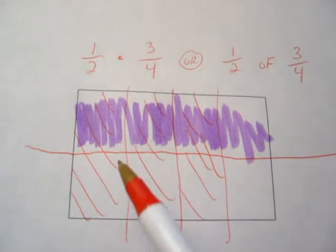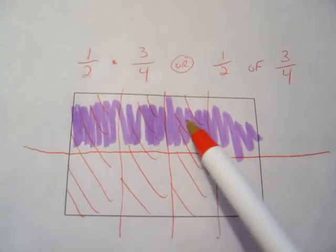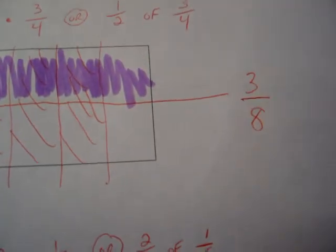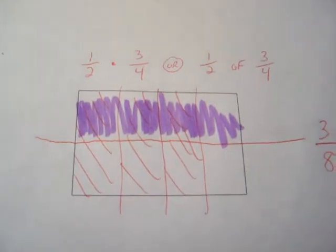And how many got double shaded red pen and purple highlighter? 1, 2, 3. So the answer is 3 eighths. So there you have the result with the drawing.